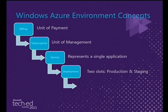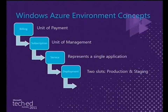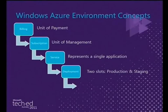The purpose of the production and staging slots is simply to allow you to deploy new versions of your application while minimising or eliminating downtime. The production slot always has the URL you chose — foo.cloudapp.net — while the staging slot has a GUID URL. Normally you'll deploy a new release to the staging slot, test that it works, then flip the virtual IP addresses, and delete the old staging environment. It's a really useful feature, but don't confuse these slots with the notion of environments.